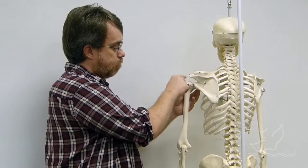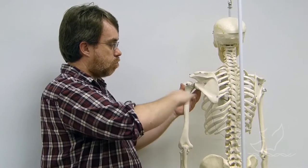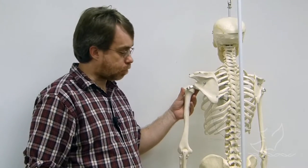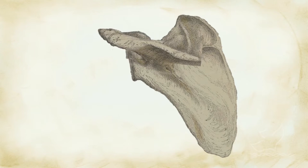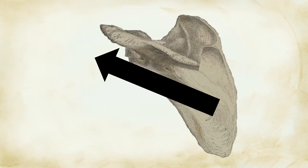It's basically even and parallel to the ground. In Homo naledi, that part, that bone right there, is much more angled upward.